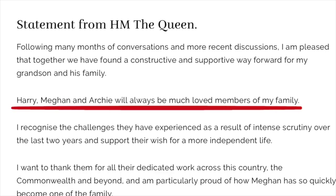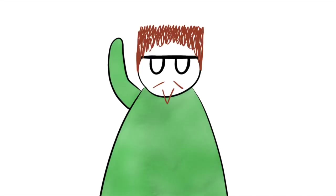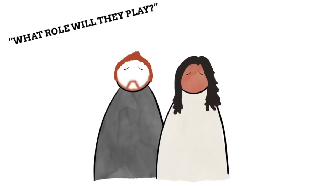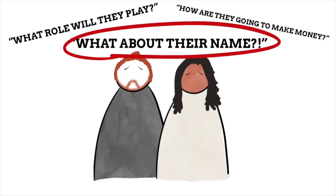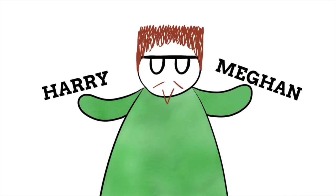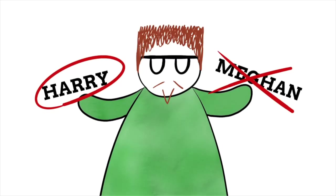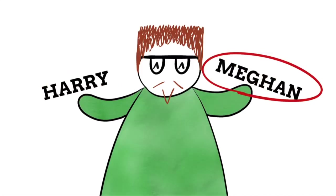On January 18th, the Queen and Buckingham Palace made statements on Harry and Meghan's ties to the royal family. Buckingham Palace stated they are required to step back from royal duties, while the Queen said Harry, Meghan, and Archie will always be much loved members of her family. This is all still very much a developing story — people are wondering what roles they'll play, how they'll earn money, and of course what will become of their royal titles. If they are stepping away from the royal family, surely they can't keep using all those royal titles?